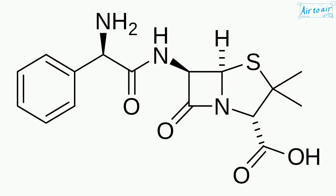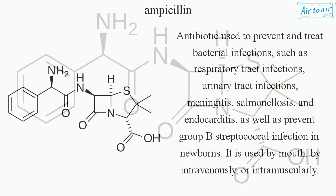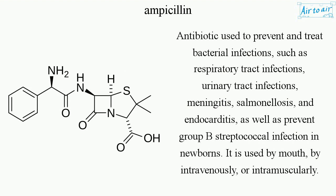Ampicillin. Antibiotic used to prevent and treat bacterial infections, such as respiratory tract infections, urinary tract infections, meningitis, salmonellosis, and endocarditis, as well as prevent group B Streptococcal infection in newborns.